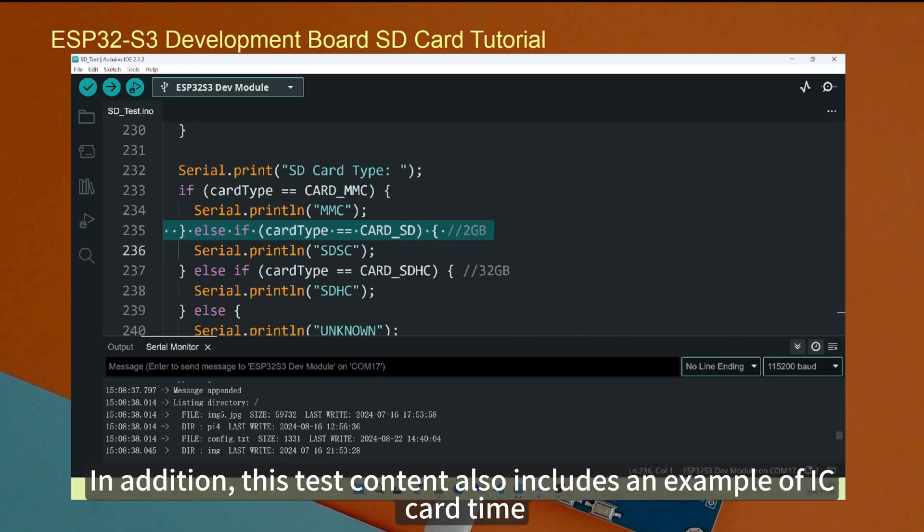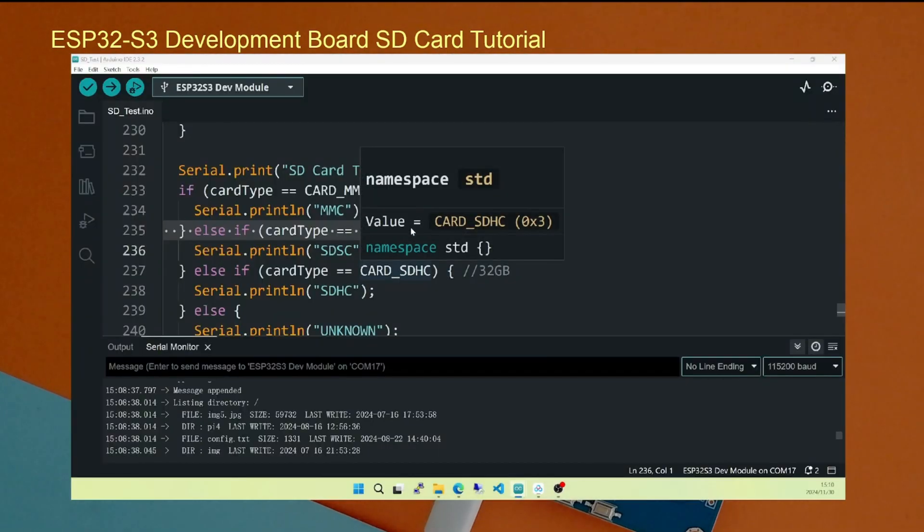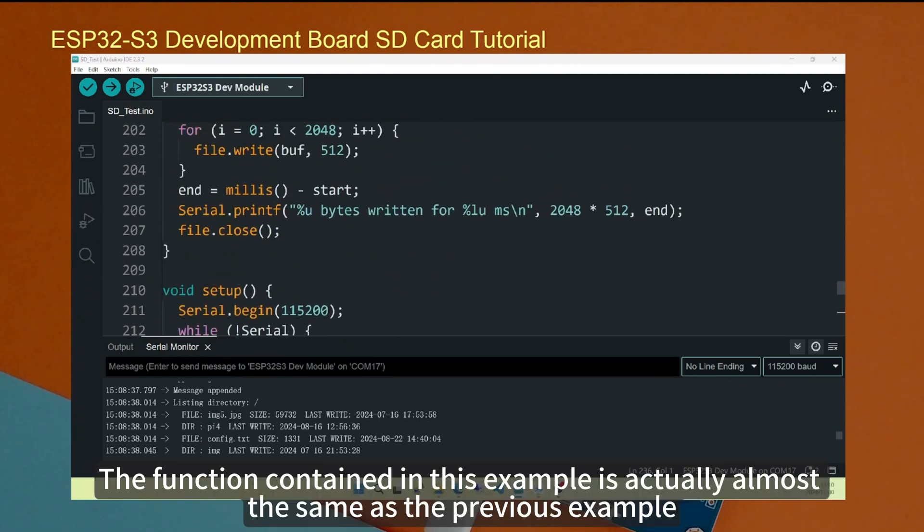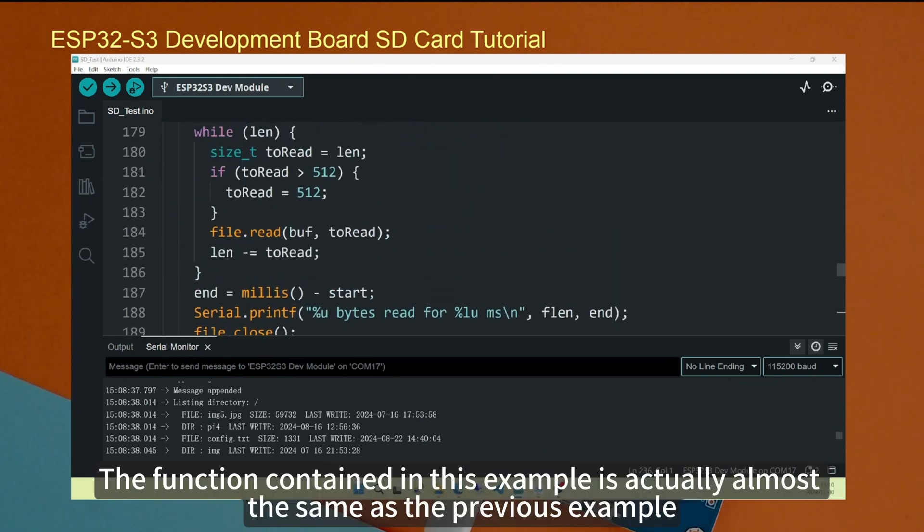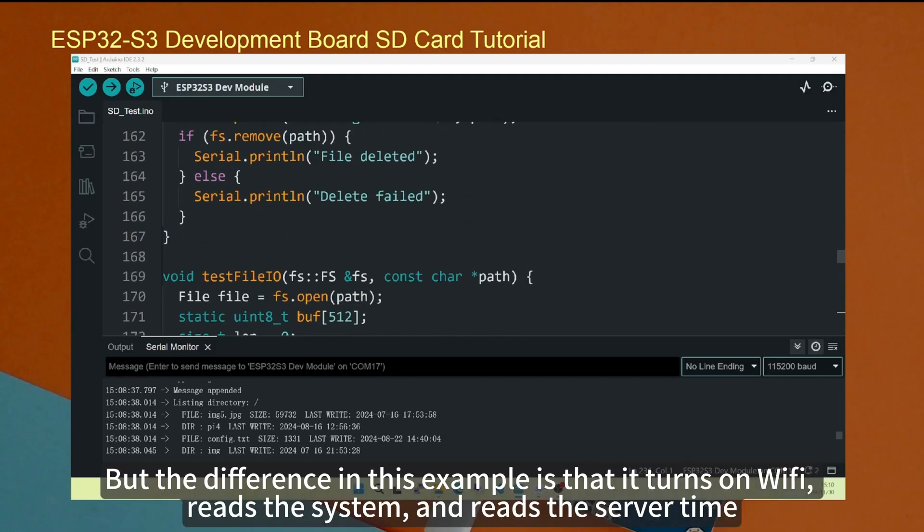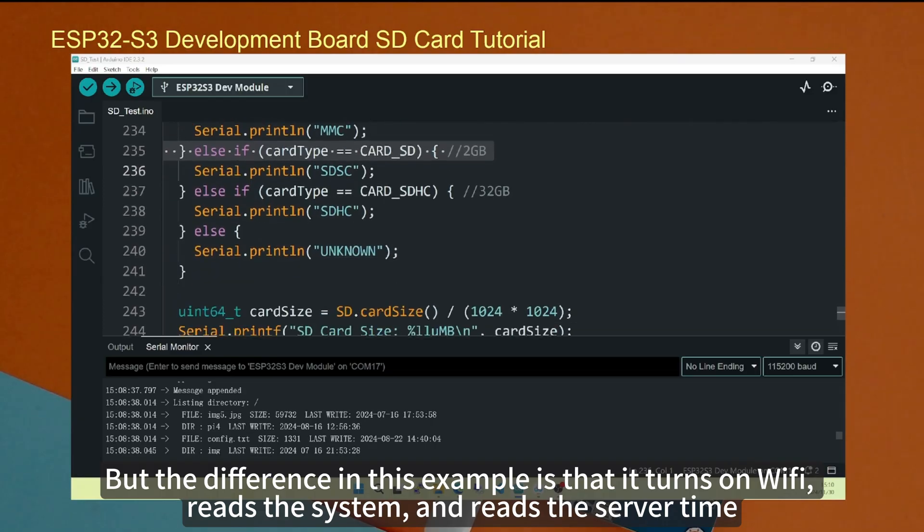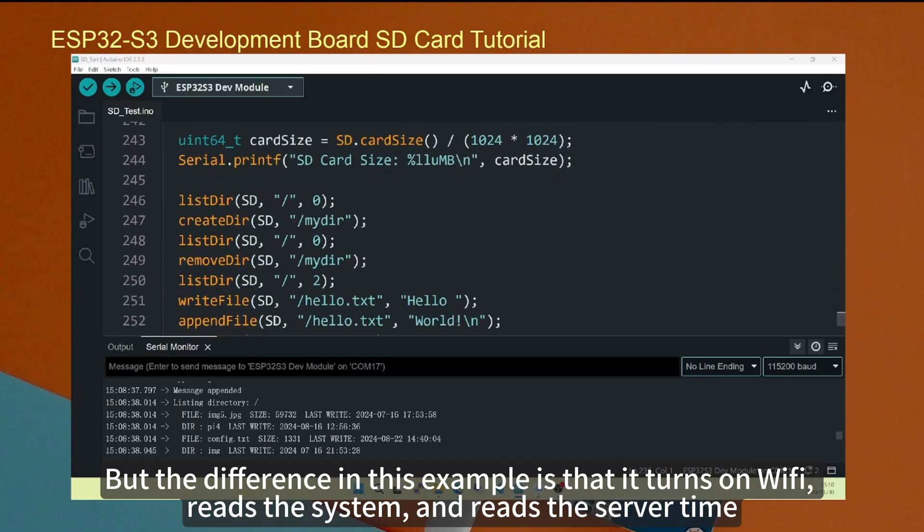In addition, this test content also includes an example of SD card timing. The function contained in this example is actually almost the same as the previous example. But the difference in this example is that it turns on Wi-Fi, reads the system, and reads the server time.